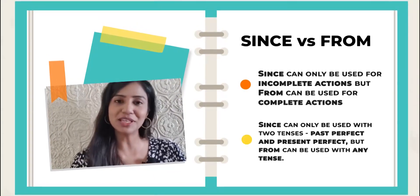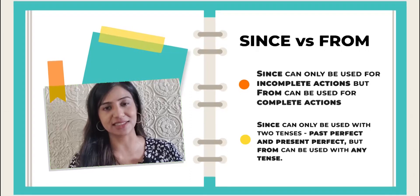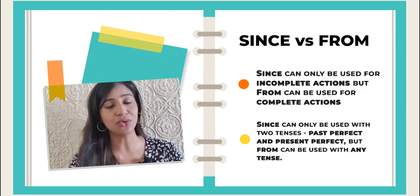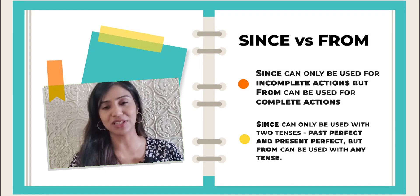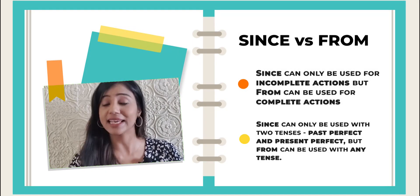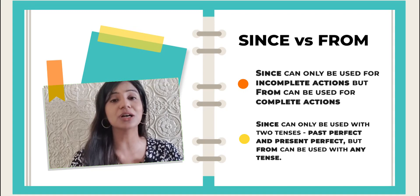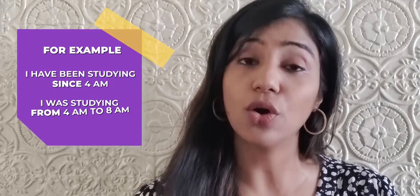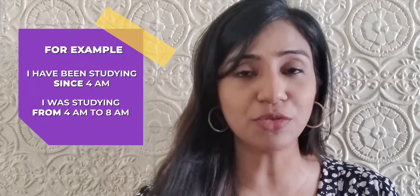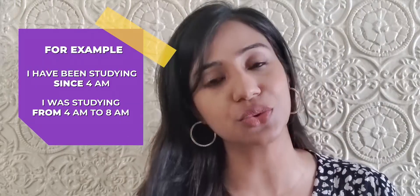Since can only be used with perfect tenses, and that too only for incomplete actions that are still ongoing. From, on the other hand, can be used with any tense and is used for completed actions. For example: I have been studying since 4am, or I was studying from 4am to 8am.